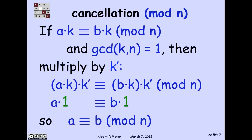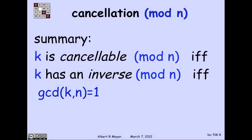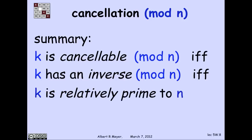And in fact, you can work out the converse implications. The punchline of this is, well, first of all, this is the cancellation rule. You can cancel providing that the GCD of k and n is 1, that k is relatively prime to n. So this is the summary. k is cancelable mod n if and only if k has an inverse mod n if and only if the GCD of k and n is 1, which I can restate as k is relatively prime to n. And that's the story.